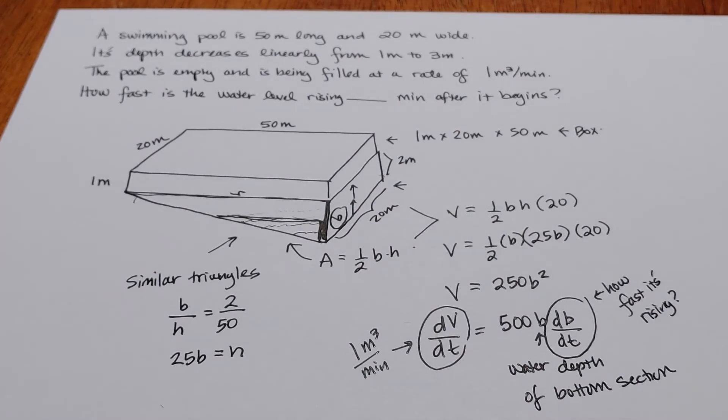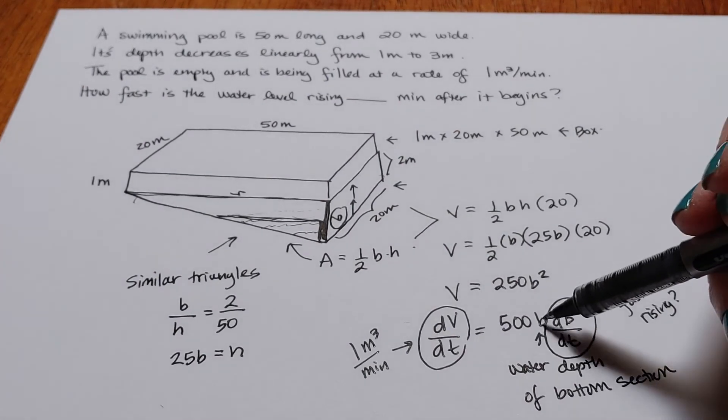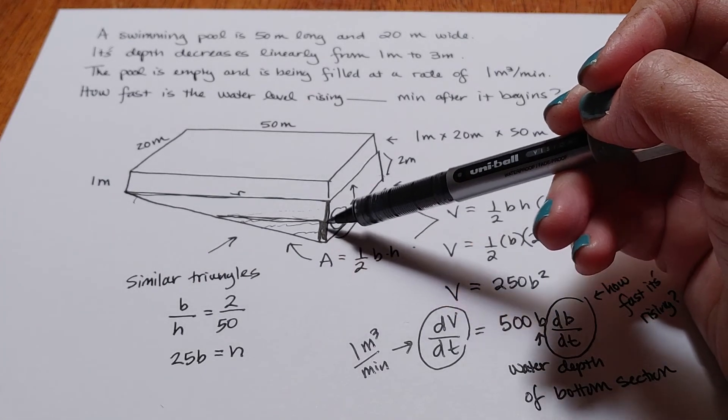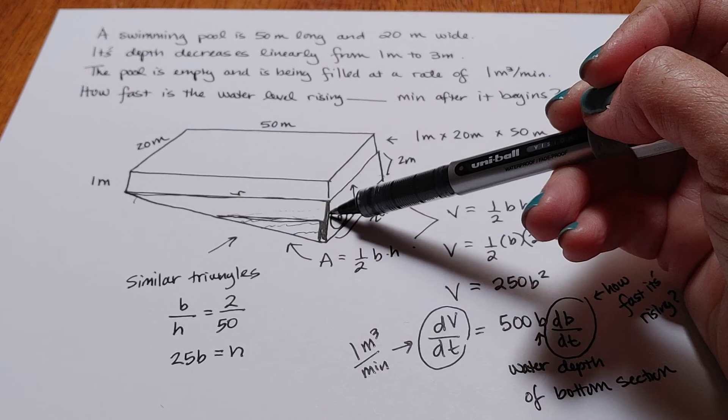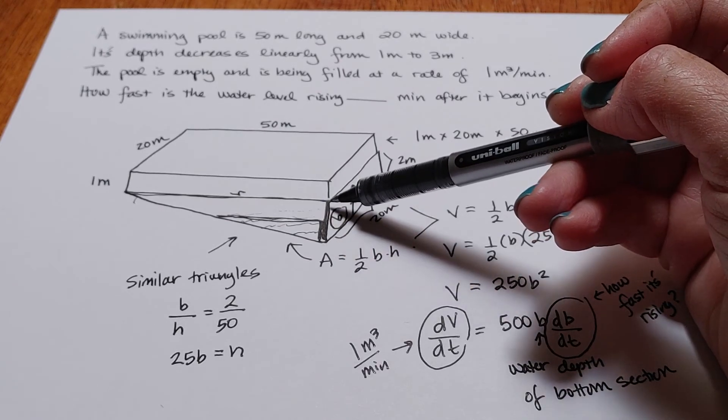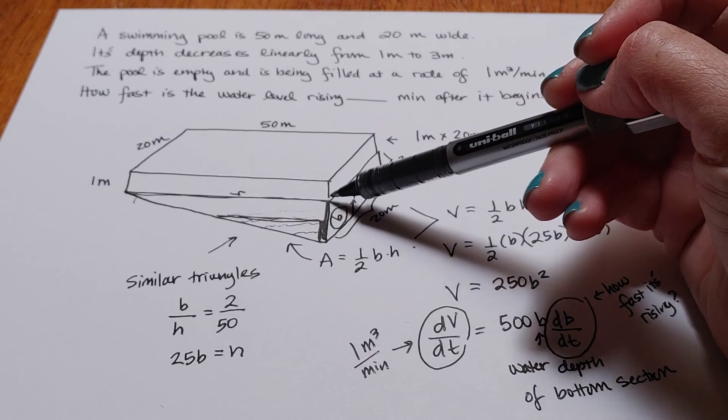So all that's pretty much left to do is we need to know at what depth are we talking about. So are we at a depth of 1 meter, at 1.2 meters, at 1.5 meters, at 2 meters? Now once we get past 2 meters, then what's going to happen is we're going to actually switch shapes.